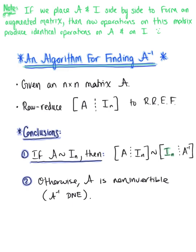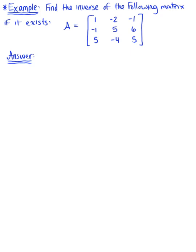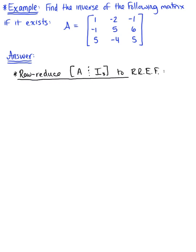Let's put this algorithm into practice. Find the inverse of the following matrix if it exists. We are given a 3-by-3 matrix A. To find the inverse, we row reduce the augmented matrix [A | I₃] to row reduced echelon form. Matrix A is [1, -1, 5; -2, 5, -4; -1, 6, 5] augmented with the 3-by-3 identity matrix [1, 0, 0; 0, 1, 0; 0, 0, 1].